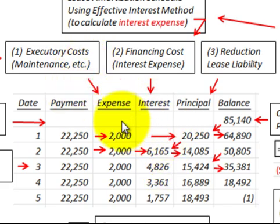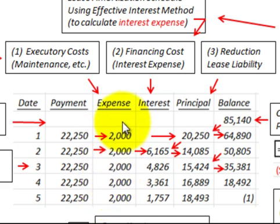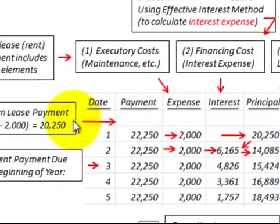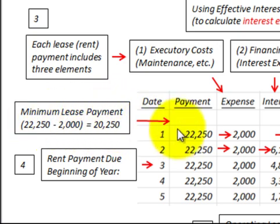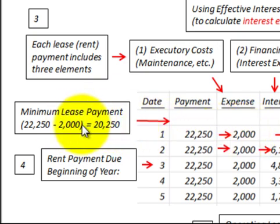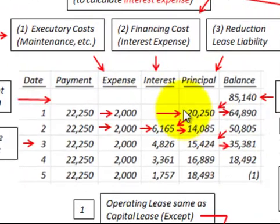The first thing we have to do is set up the amortization schedule. Looking at our amortization schedule, we know the payments that are going to be received on this lease and the expenses that are going to occur. Those executory costs would be the maintenance costs and so forth. We need to calculate the interest expense on this lease. The minimum lease payment is $22,250 paid each period, but we subtract out the executory costs of $2,000, giving us a minimum lease payment of $20,250.